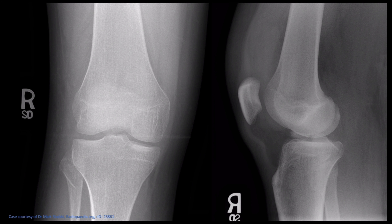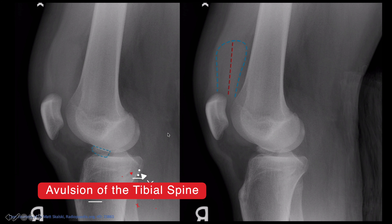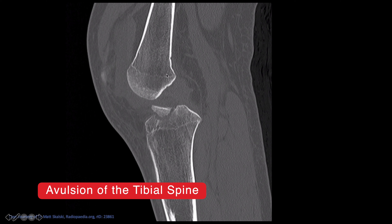This is an AP and lateral radiograph of a knee. The first thing that catches my eye is the presence of a large lipohemarthrosis. Tracing the bones all around, I see a bit of irregular bony fragment. You can't clearly see it on the AP radiograph, but there's a small radiolucent line that may correspond to that fragment. This is a lipohemarthrosis with a bony fragment - this is an avulsion of a tibial spine, shown on a sagittal CT scan.